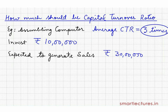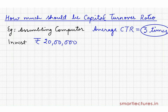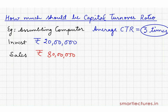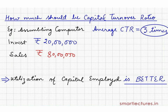If you invest 20 lakh rupees, you should generate 60 lakhs in sales. But suppose you invest 20 lakhs and start generating sales of rupees 80 lakhs — it means your utilization of the capital employed is much better as compared to others in the industry.